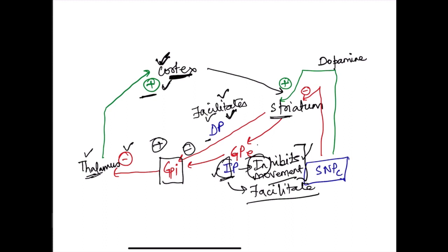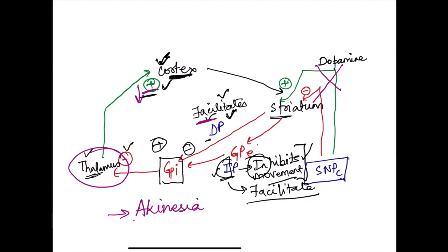In parkinsonism, as we said, the dopaminergic neurons are lost. So dopamine is not able to facilitate movement, and therefore the input from the thalamus to the cortex is going to reduce. The facilitatory signals to the cortex are reduced, and this leads to a hypokinetic disorder. One key feature of parkinsonism is akinesia — inability to initiate movement.